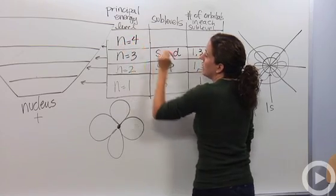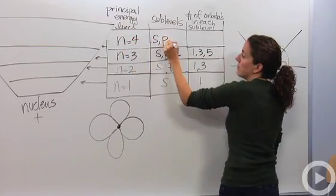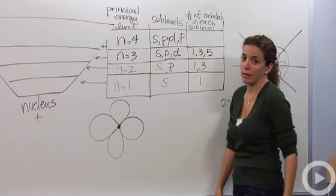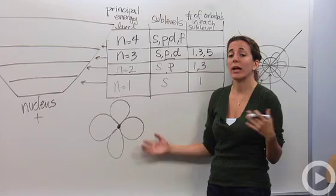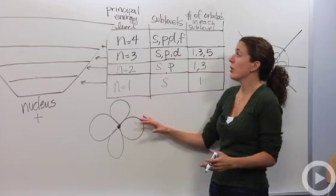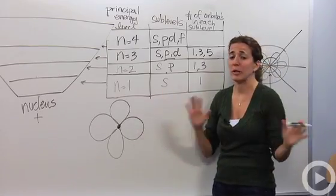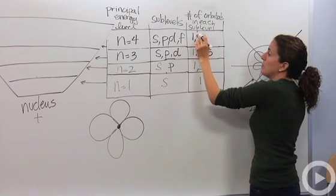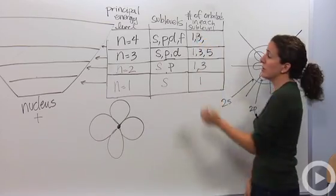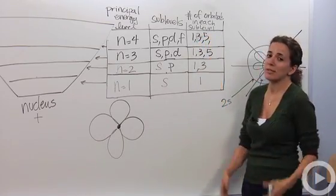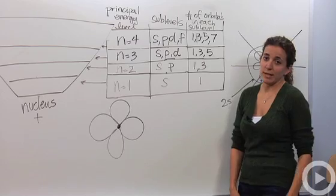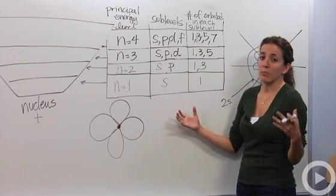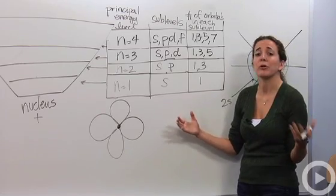The n equals four principal energy level has an S, a P, a D, and then also an F orbital. F orbitals are extremely complicated. Each orbital actually looks very different from each other, so I'm not even going to attempt to draw it. But there's one S orbital, three P orbitals, five D orbitals, and as you can guess, there are seven F orbitals. F is, for now, the highest energy orbital that we are going to find.